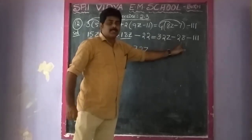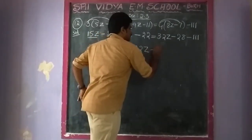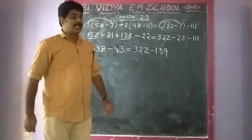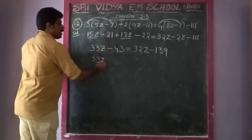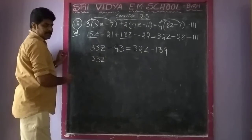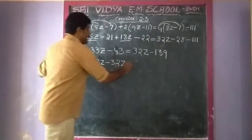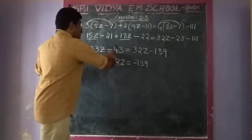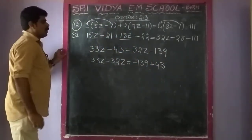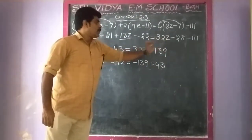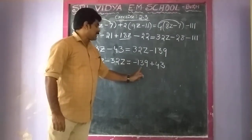Minus 43 is equal to 32z. And minus 28 minus 111 gives minus 139. Therefore, transpose 32z to the left side: 33z minus 32z. And transpose minus 43 to the right, giving plus 43.